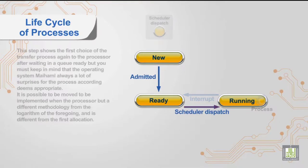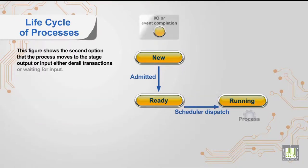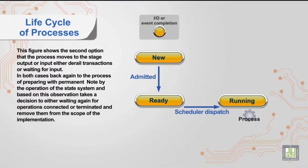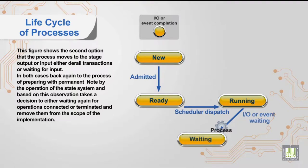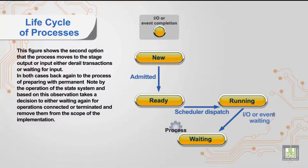This figure shows the second option: the process moves to the input or output stage, either due to derailed transactions or waiting for input. In both cases, the process returns again to the ready queue.